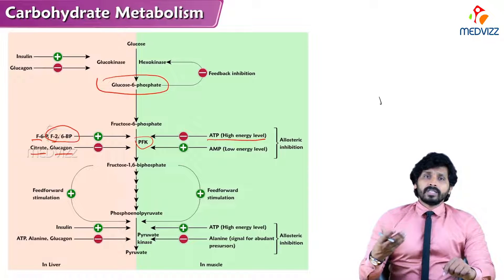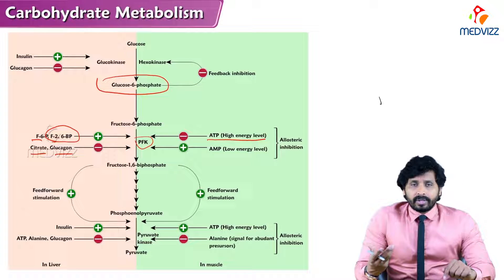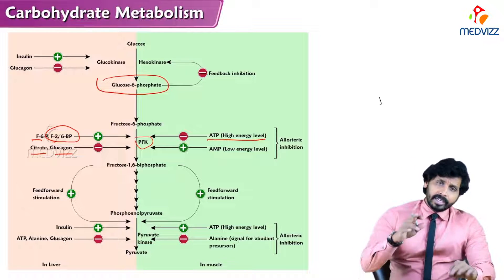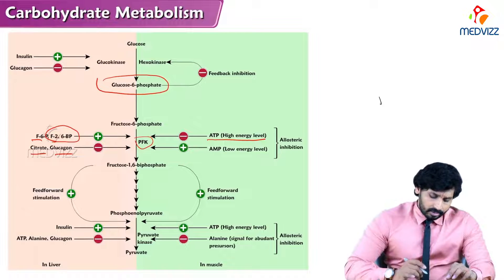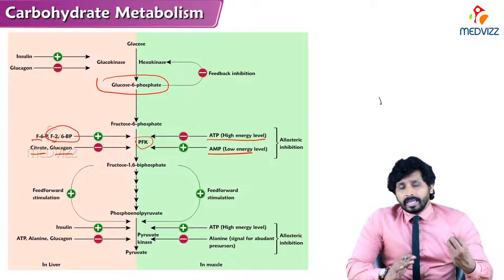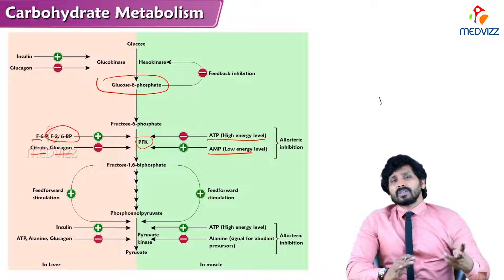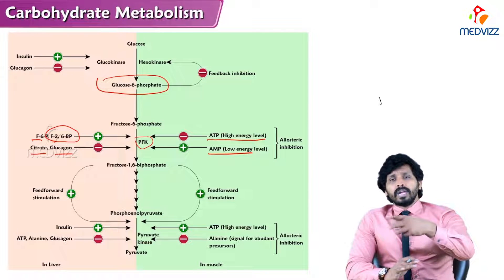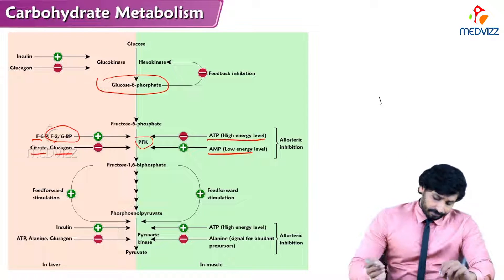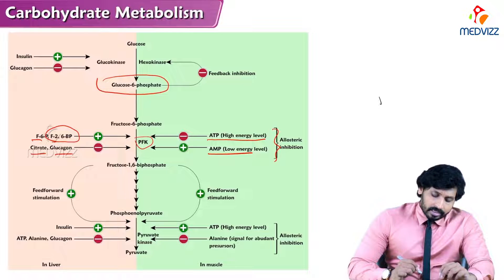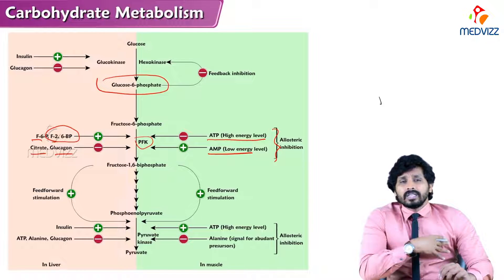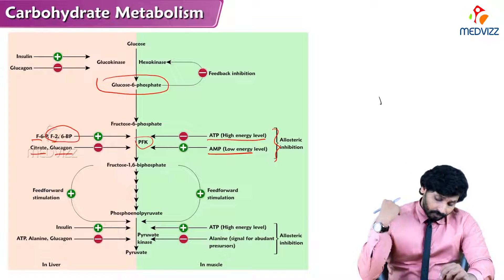High ATP means there is already sufficient energy, so no further ATP production is needed. This excess ATP inhibits PFK1 to stop glycolysis. AMP, on the other hand, indicates decreased energy status — ATP has been exhausted down to ADP and then AMP. All these substances act on PFK1 via allosteric inhibition.